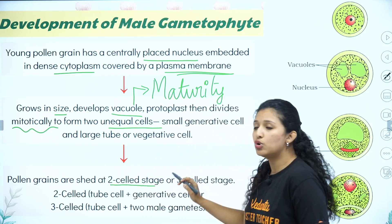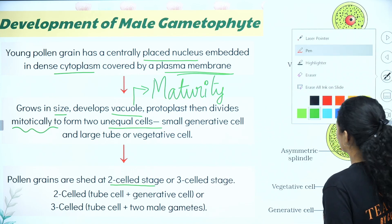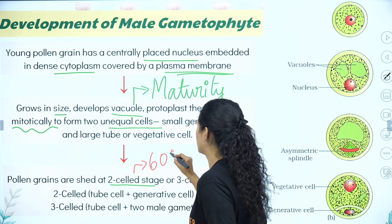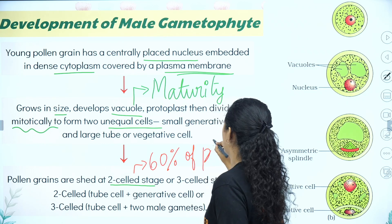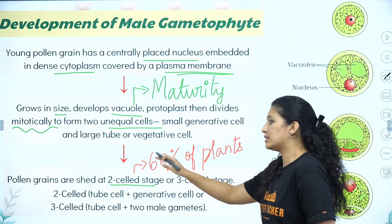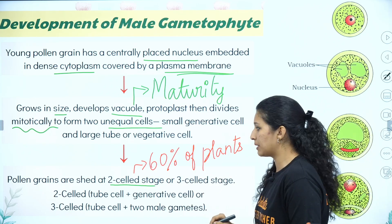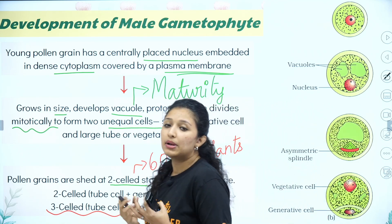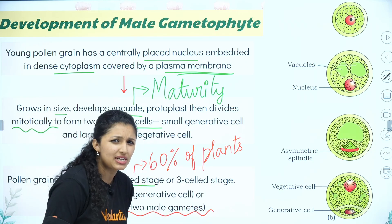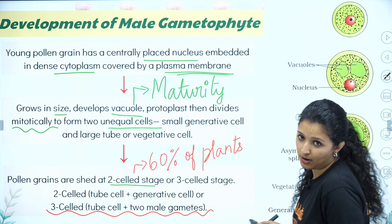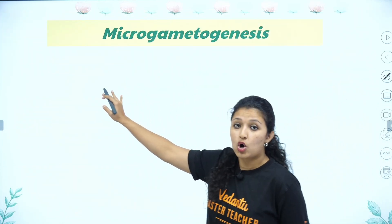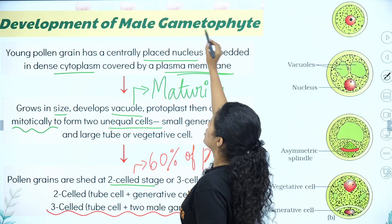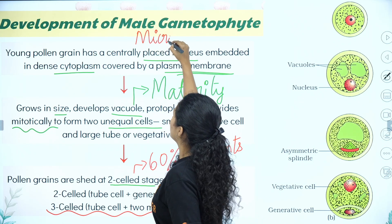The pollen grain is shed at the two-cell stage in about 60% of plants. In the remaining 40% of plants, the generative cell waits and divides further to reach three cells before being released. This development is called Micro Gametogenesis.